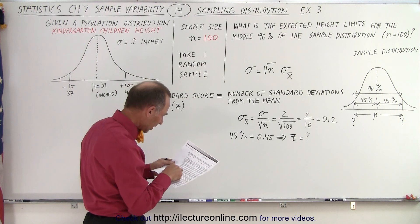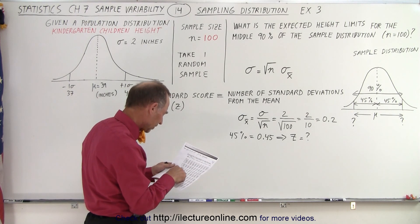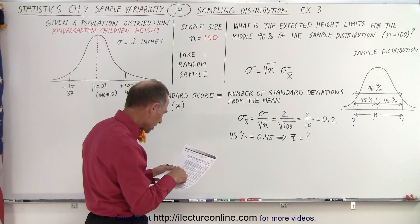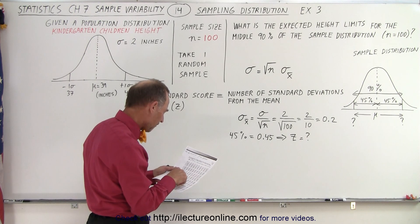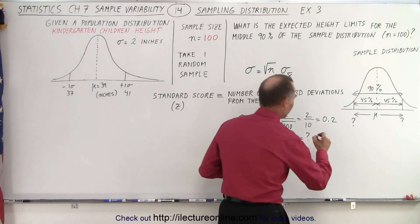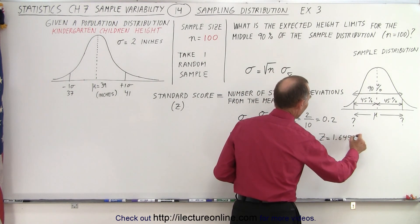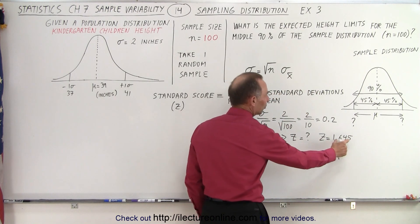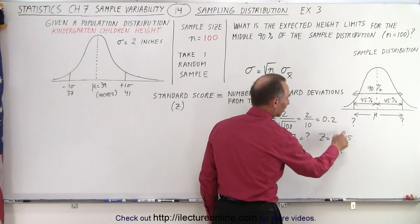And it looks like it's going to be, let's see, 1.61234, 1.645. So that corresponds to a z-score of 1.645. That means 1.645 standard deviations to the right and 1.645 standard deviations to the left from the mean.